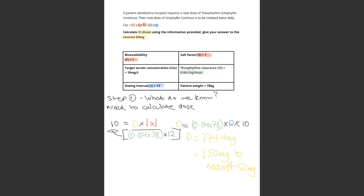We need to calculate the Theophylline clearance and the dosing interval. The Theophylline clearance is 0.04 litres per kilogram per hour. We know the patient's weight, so it's 0.04 times 78. For the dosing interval, the question says twice daily — if that's twice daily, then the dosing interval is 12 hours. If it's once daily, then the dosing interval is 24 hours. I hope that makes things a bit clearer.